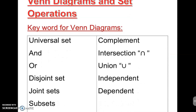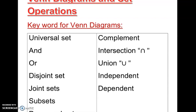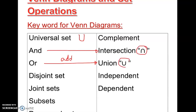Let's continue on Venn diagrams and set operations — some keywords we need to know in this section. The universal set we already know, represented by the capital letter U. We also have 'and,' which means intersection, and 'or,' which means union. The symbol for intersection refers to 'and,' and the symbol for union refers to 'or.' Intersection is a point — P-O-I-N-T — the point of intersection.